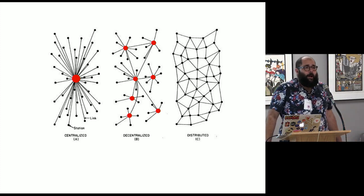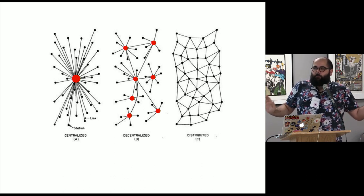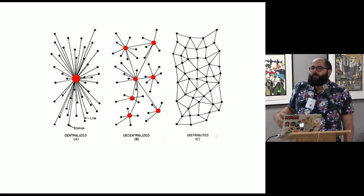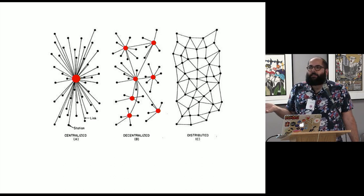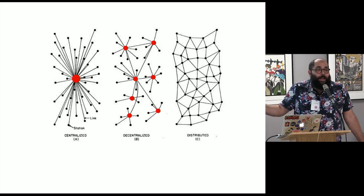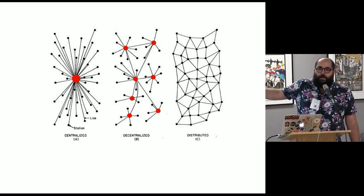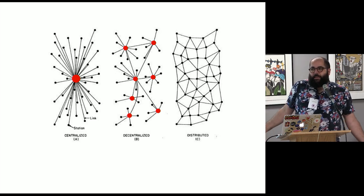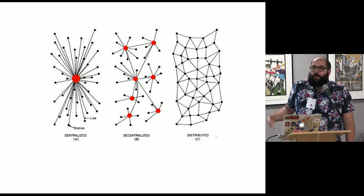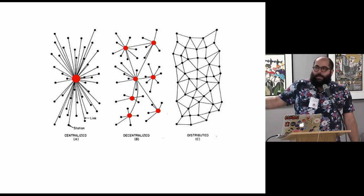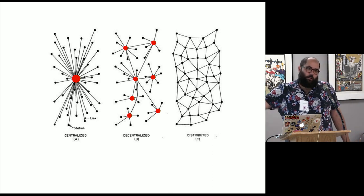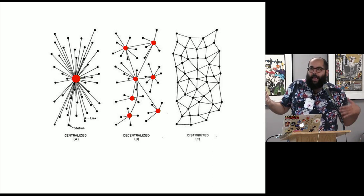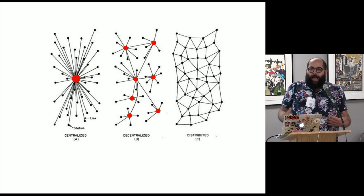A decentralized network has many different nodes of roughly equal power and then a whole bunch more nodes that are just regular users. So this is what networks like Mastodon are like, or if you look at the internet in general, one of those red things might be github.com and one of those red things might be amazon.com and that sort of thing. So in the context of the whole internet, these things are decentralized.